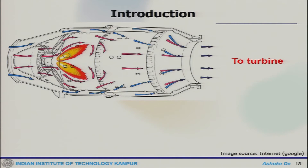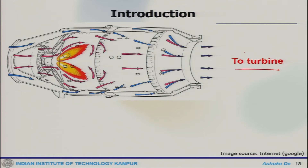In this combustor unit, primary air comes in, fuel is injected where combustion takes place, and around the periphery you have secondary and tertiary holes through which cooling air is injected. Finally, the combustion product — the hot product — goes to the turbine.